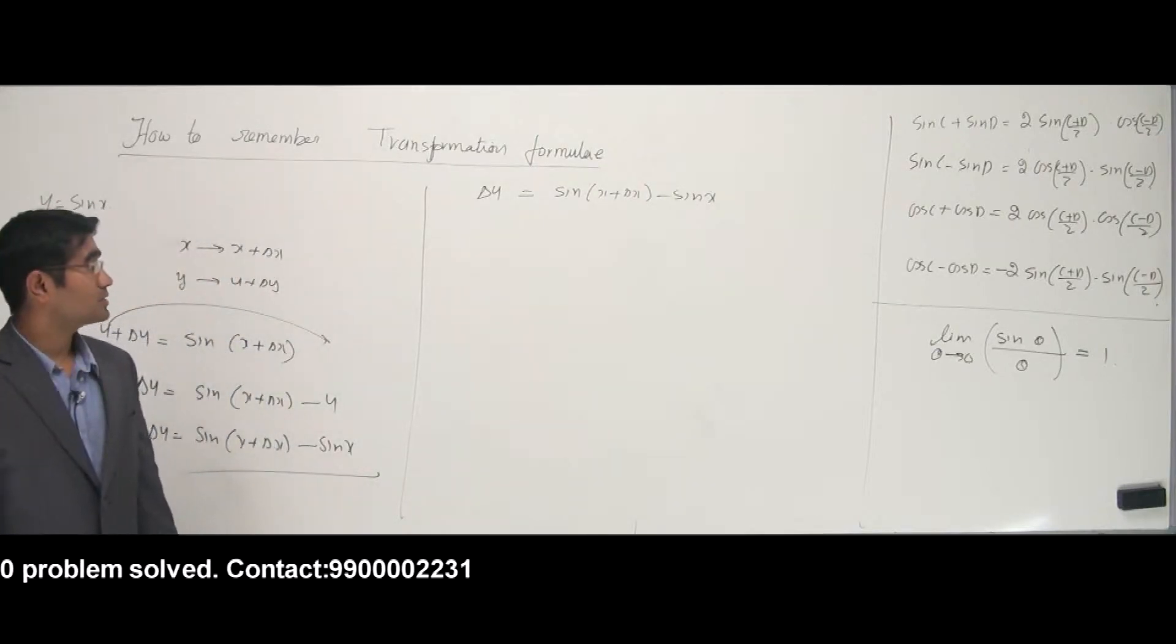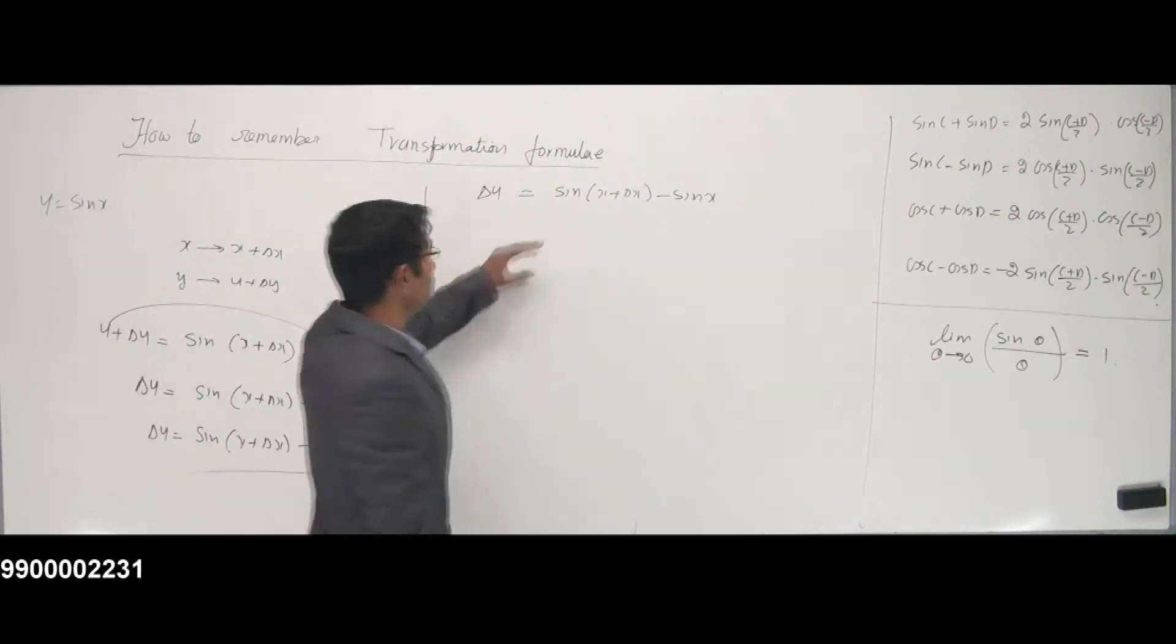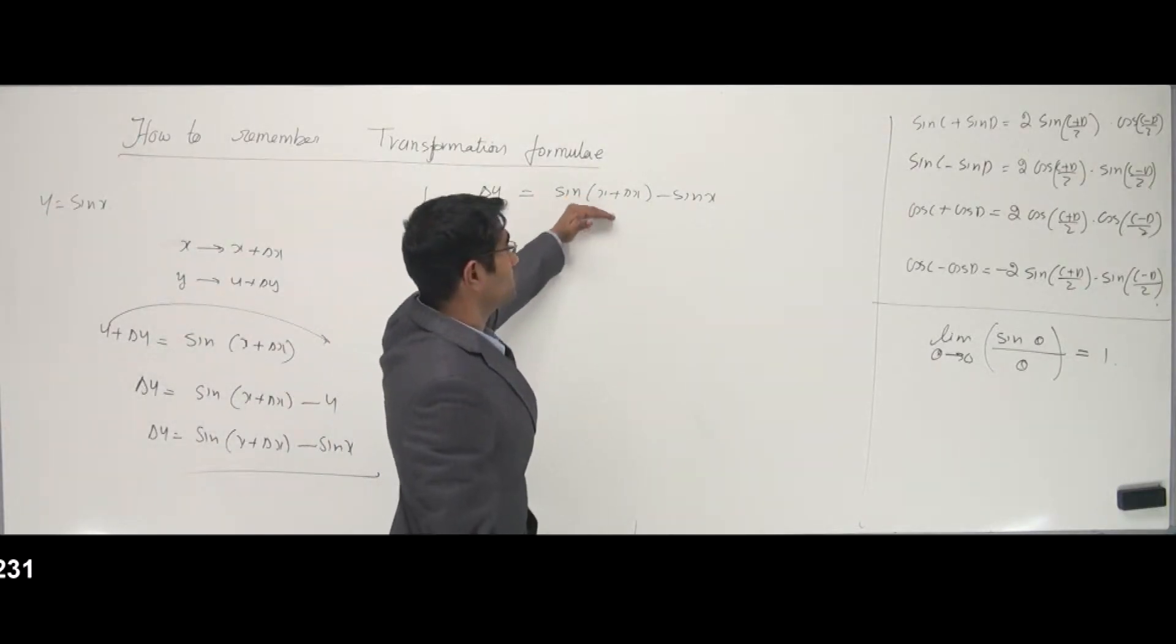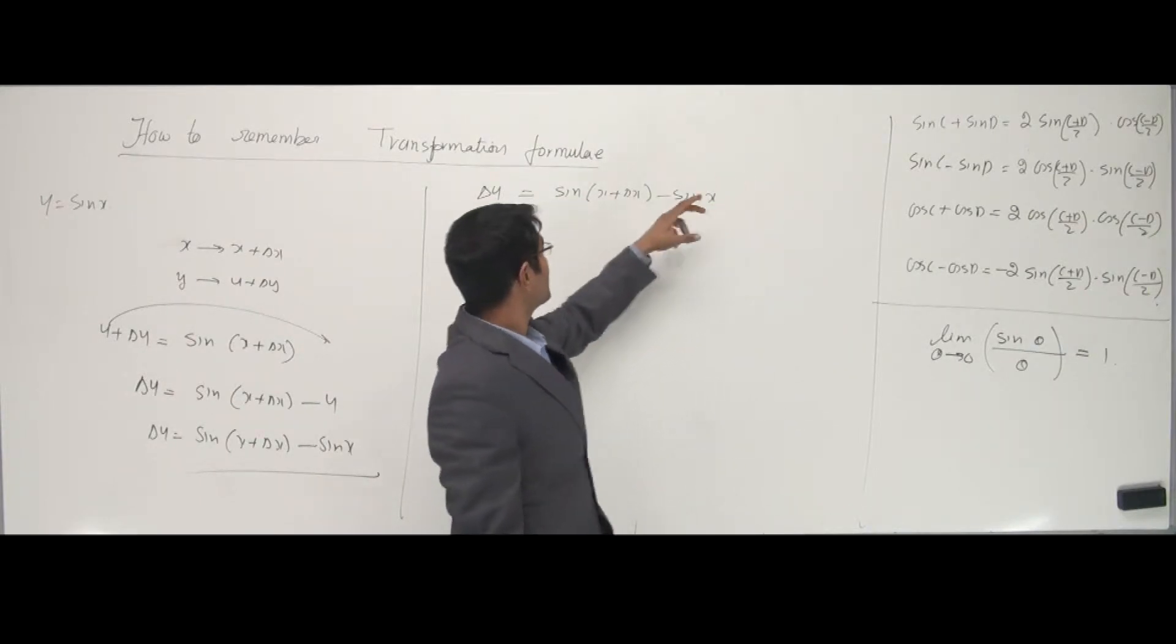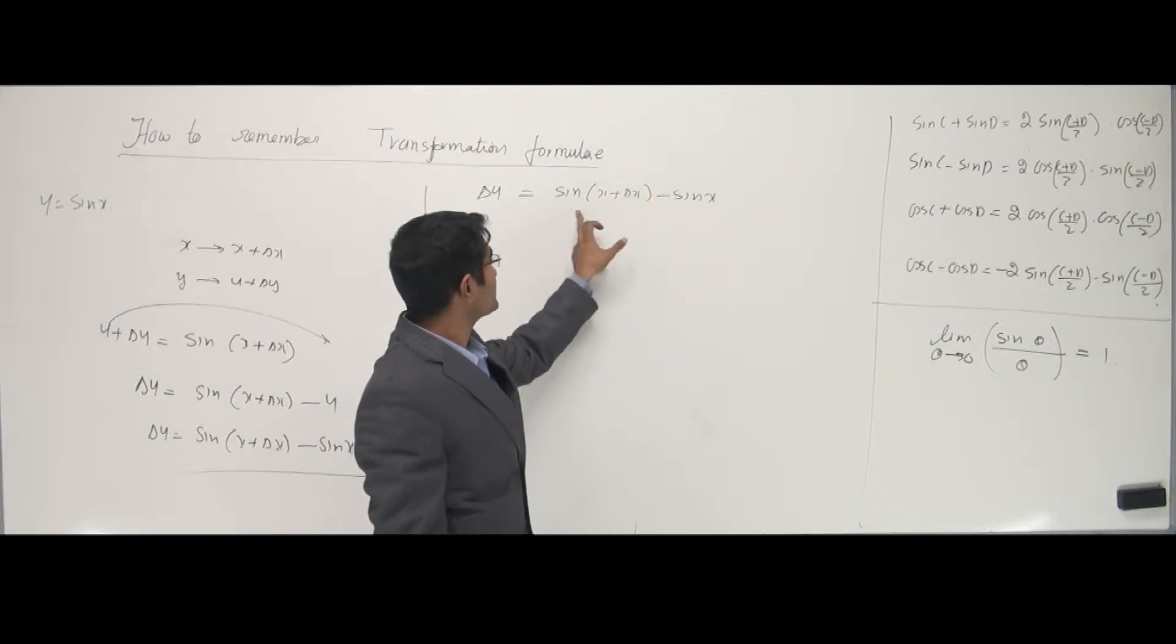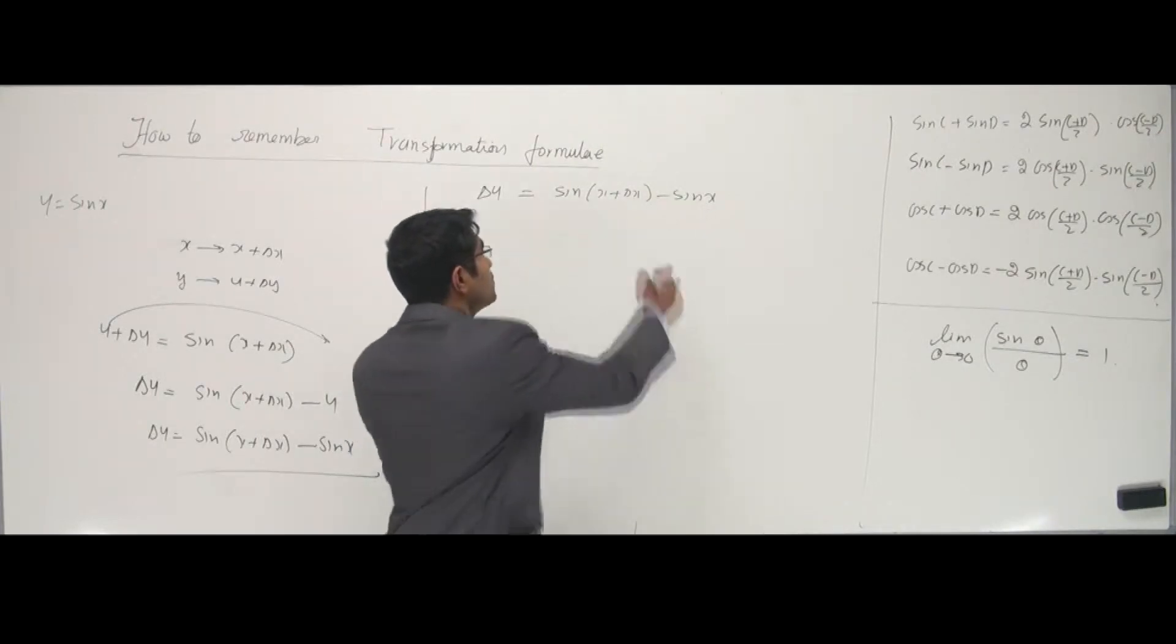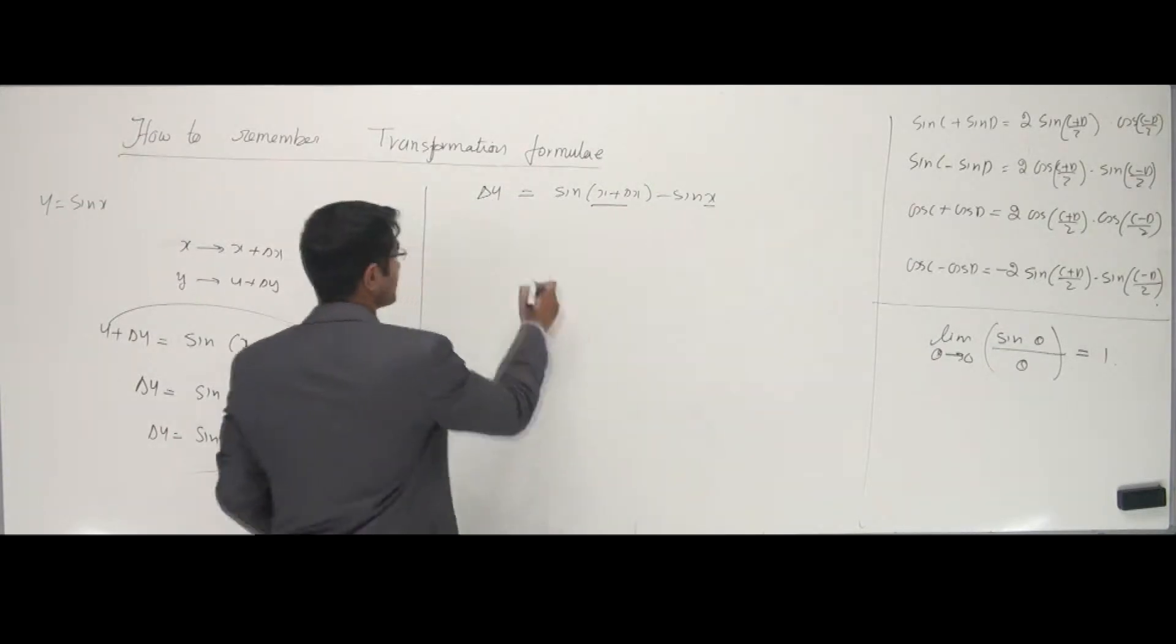Alright, now, I need to divide both sides by delta x and I should make sure that it cancels off. Now, can I use some formula here? Is this looking like one of the transformation formulas? You can see it is not the first one because that has a plus sign. It looks more like the second one. The sine c and sine d. This whole thing is c. This whole thing is d.